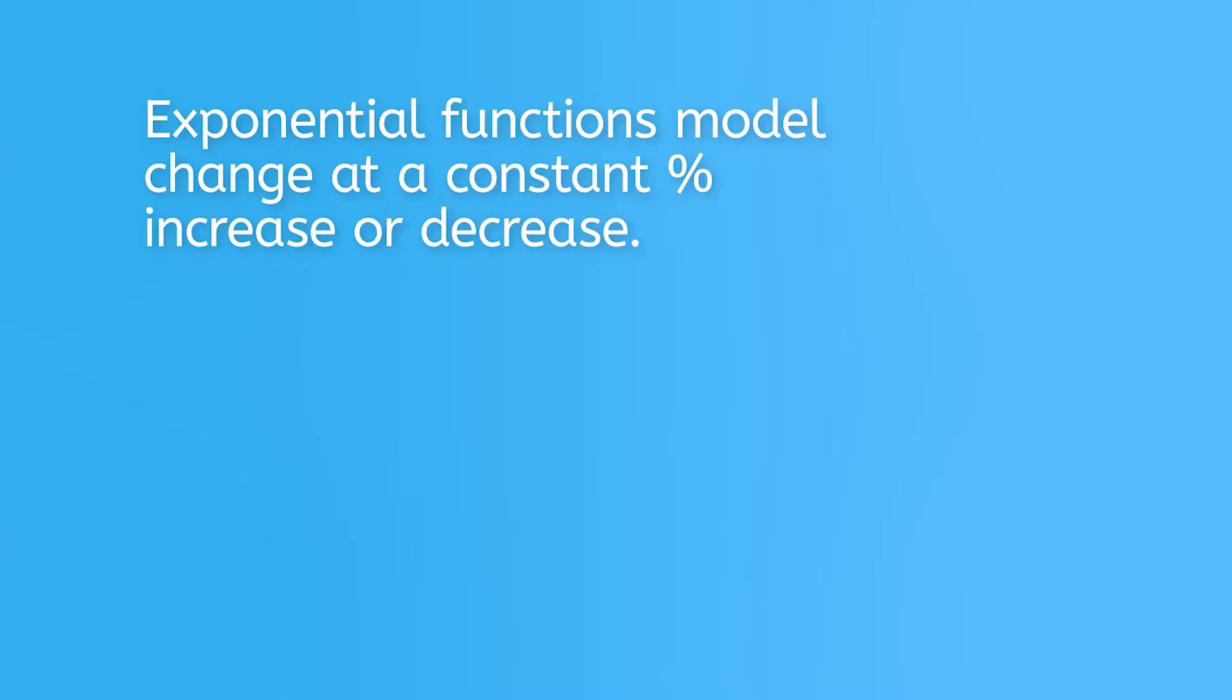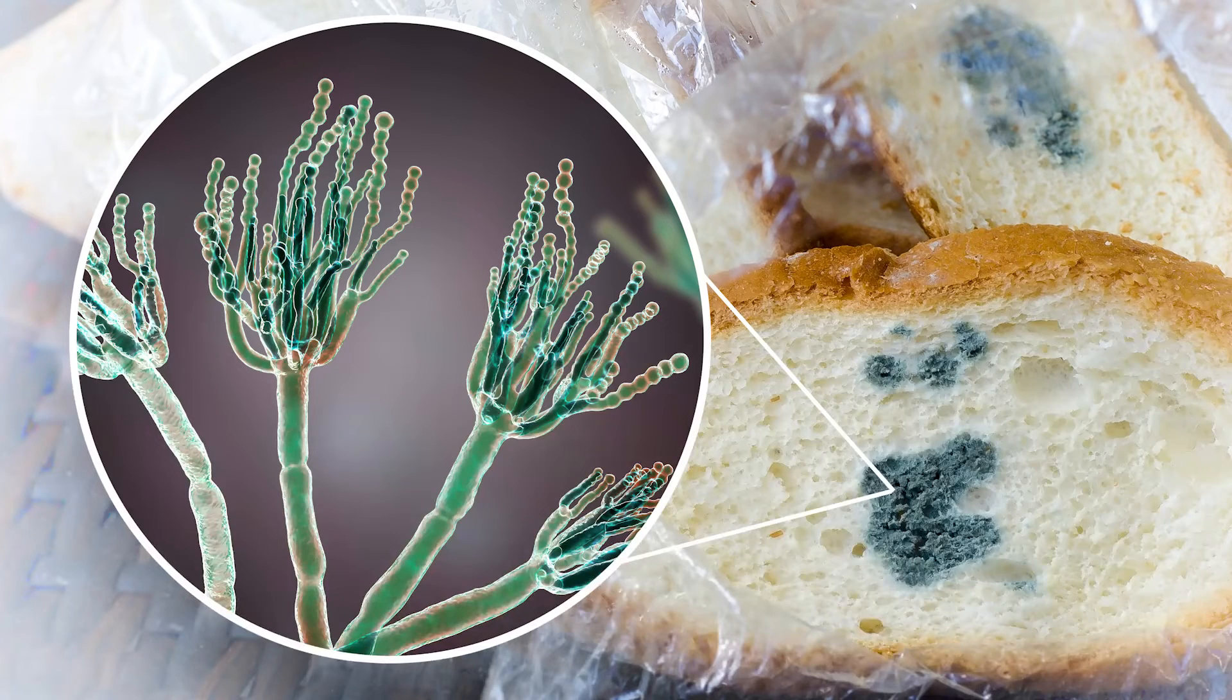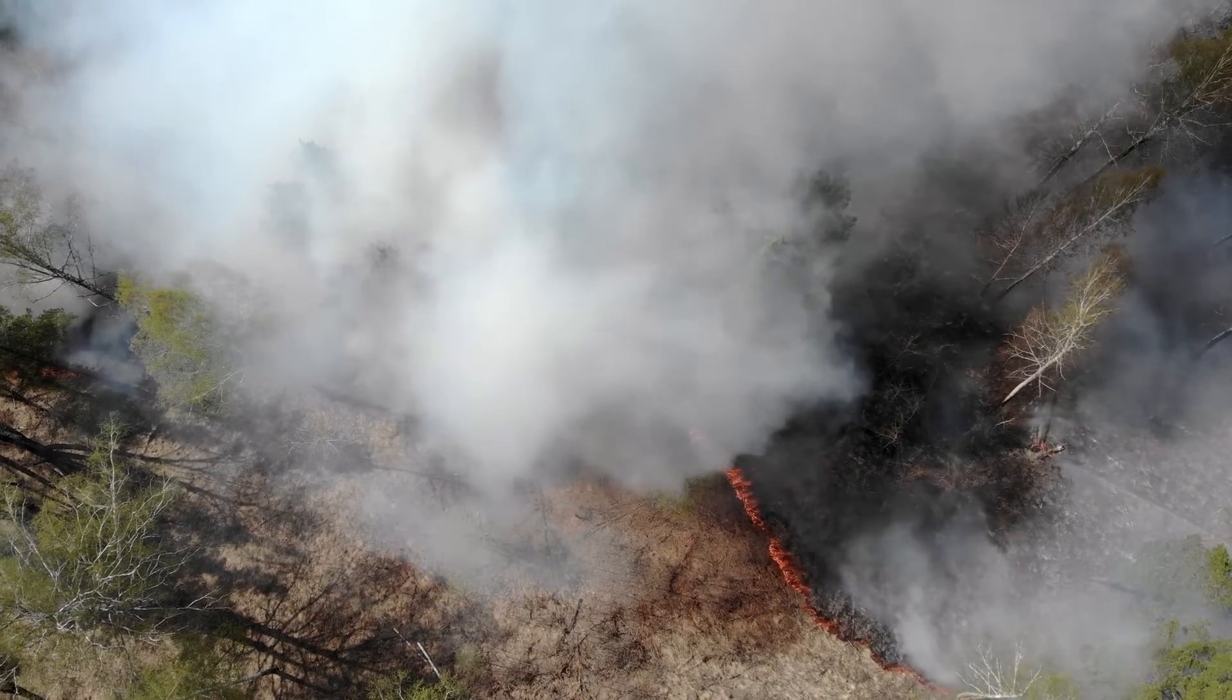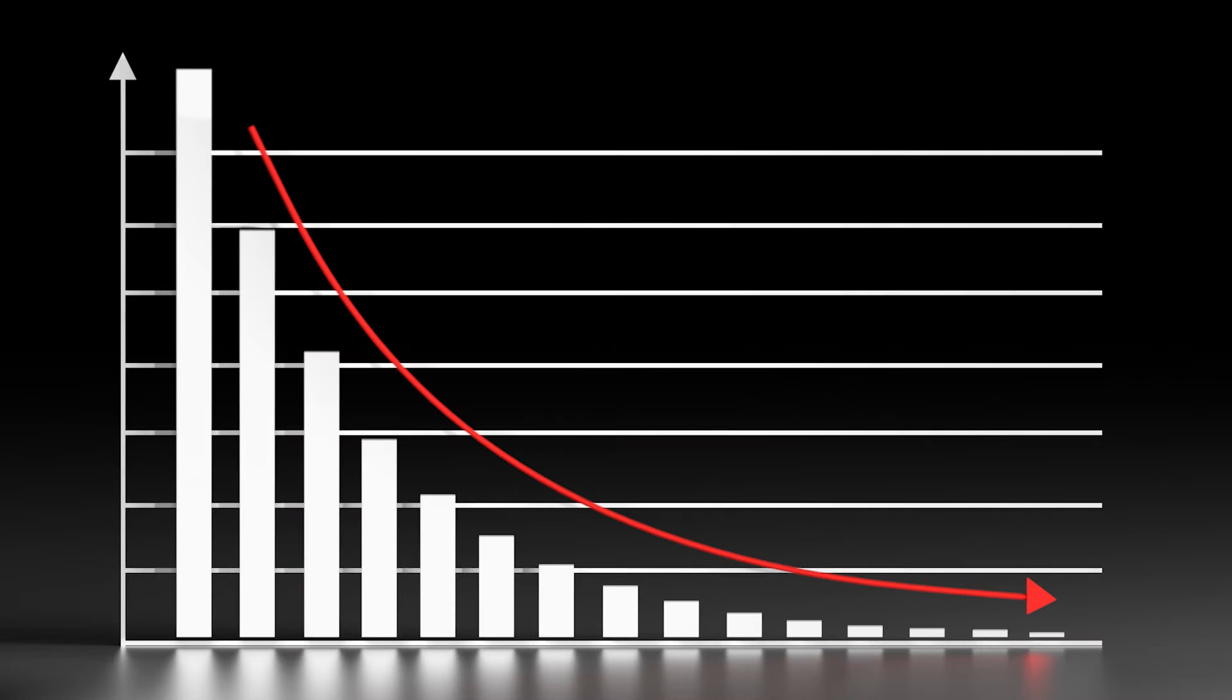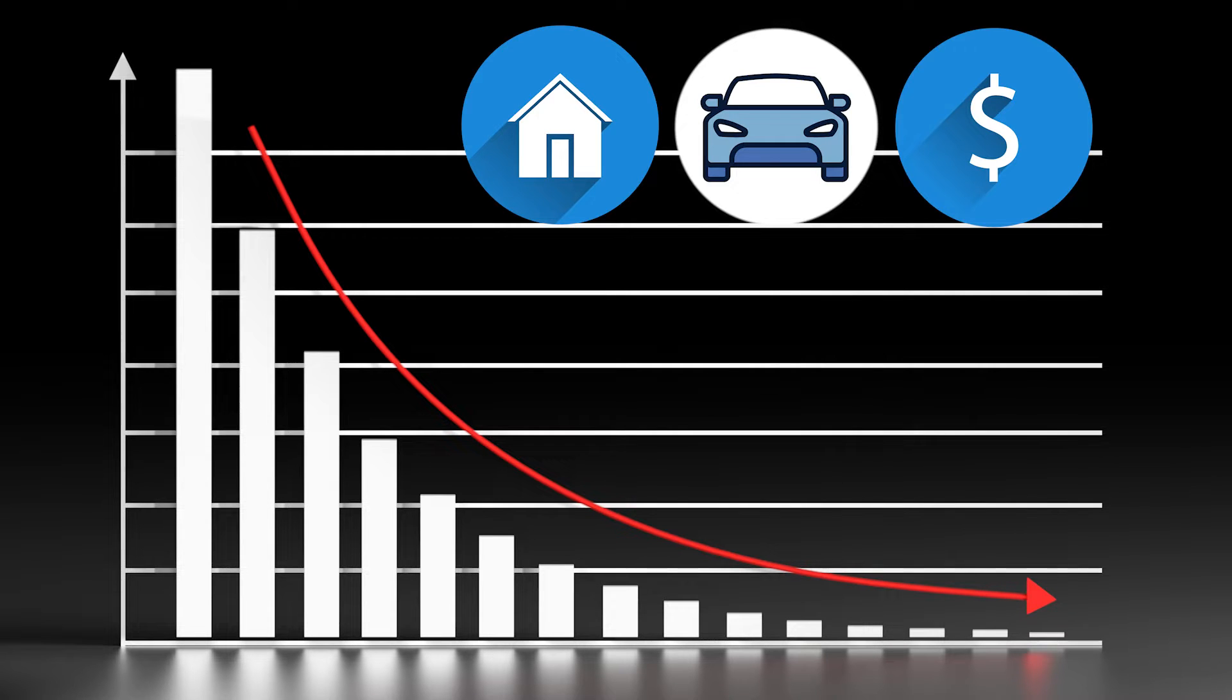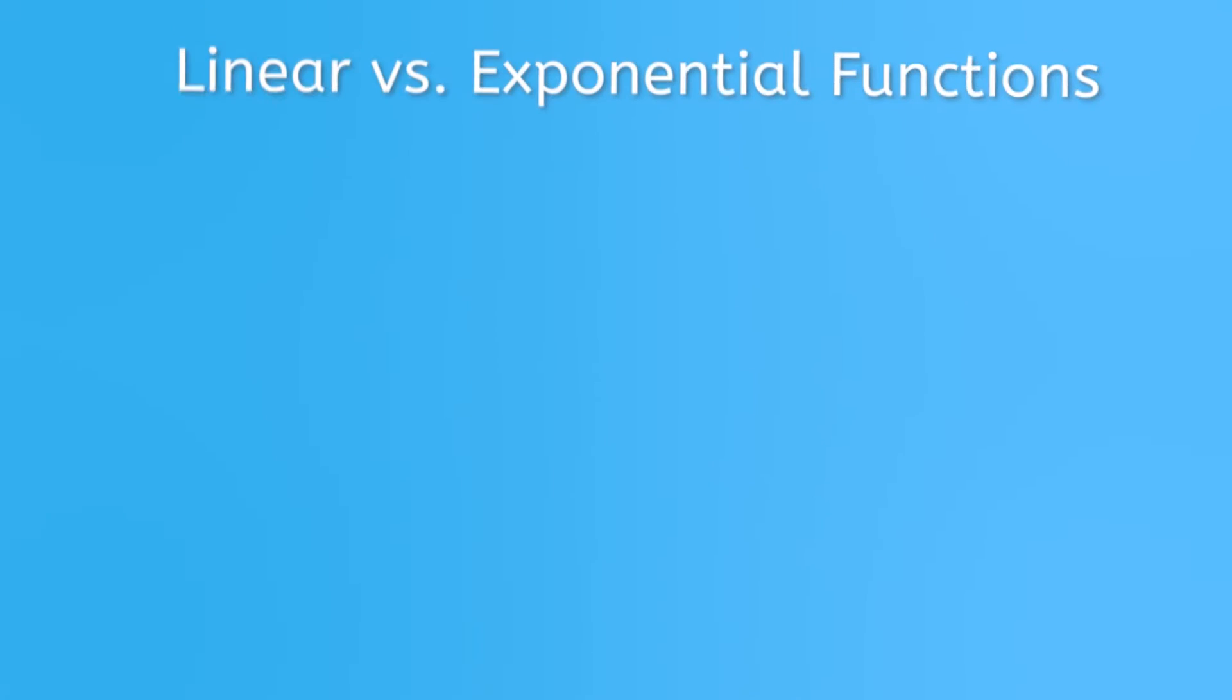We use exponential growth models to study human population growth, the growth of mold on food, the spread of fires and diseases, and on a less depressing note, the growth of money that gains interest over time. Exponential decay models can be used to examine the depreciation in value of many things, houses to cars, to the value of the dollar itself.